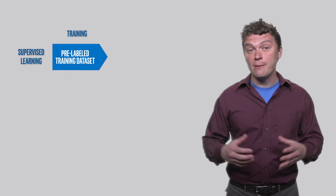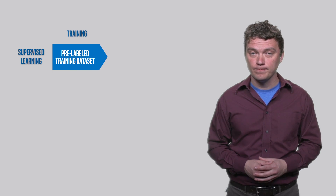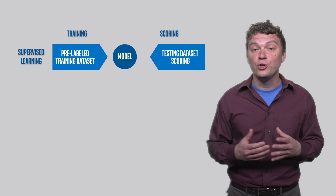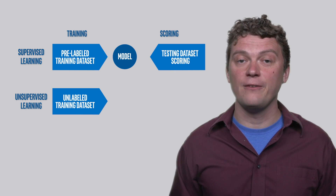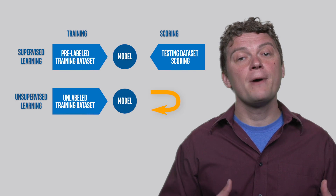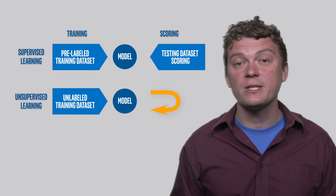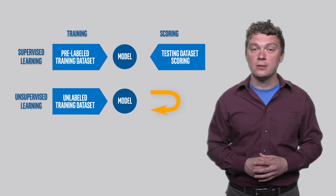In the supervised learning case, the training data set is pre-labeled for classification problems, or function values are known in the case of regression. After training is done and the model has a minimum cost function for the training data set, we switch to scoring, where we label or predict regression function values for new data. Clustering and filtering are typical unsupervised learning tasks.